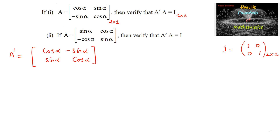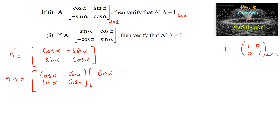Now let us multiply A dash into A. A dash into A is equal to: we write cos alpha, minus sin alpha, and sin alpha, cos alpha — multiplied with the matrix A which is cos alpha, sin alpha, minus sin alpha, and cos alpha. Multiplying row with column: cos alpha into cos alpha gives cos squared alpha.